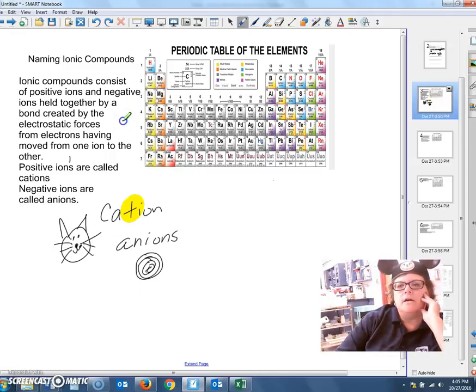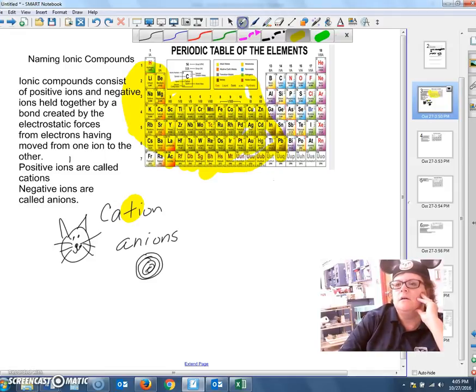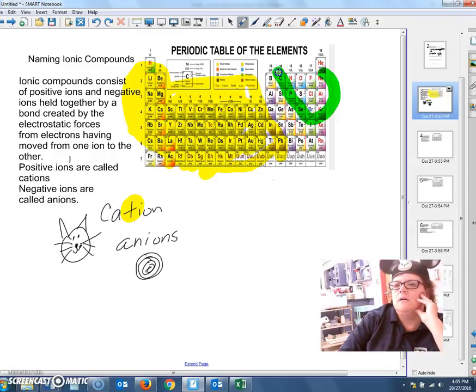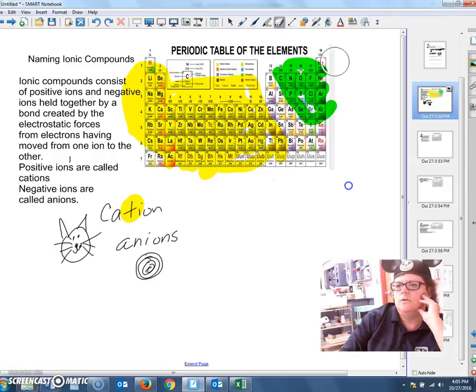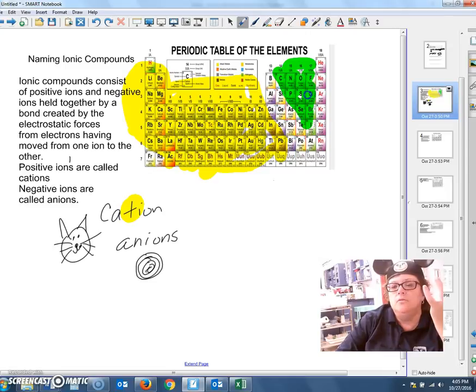Now, where do you find cations? Cations are on the metal side. All the metals form cations. That's part of why they're metals. Anions are on the non-metal side. And of course, noble gases would not be included in that. So, we have lots of cations and not a lot of anions, or so it would seem.